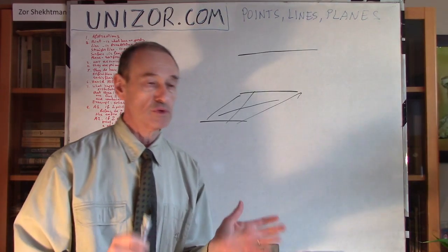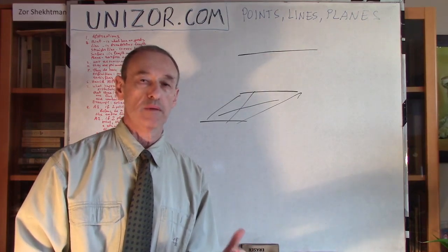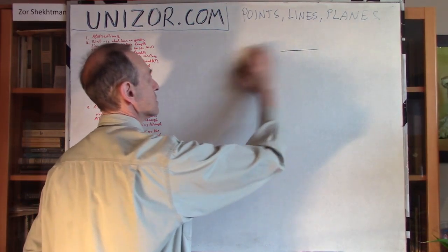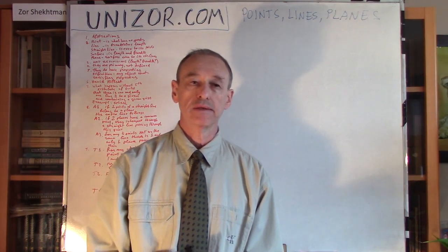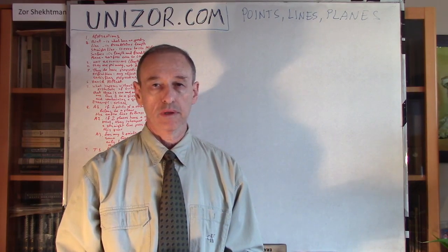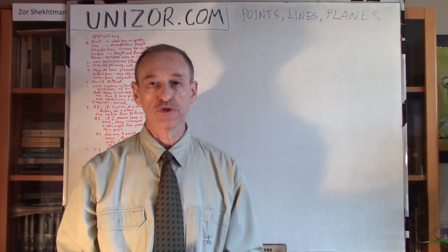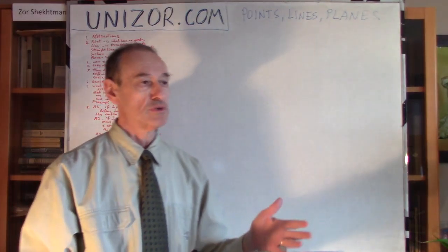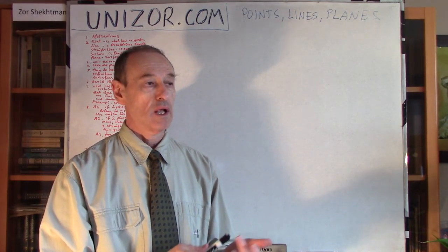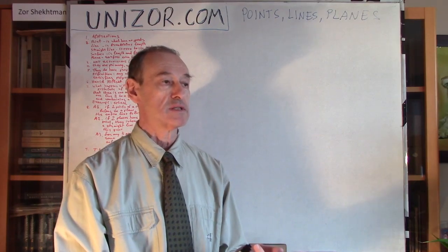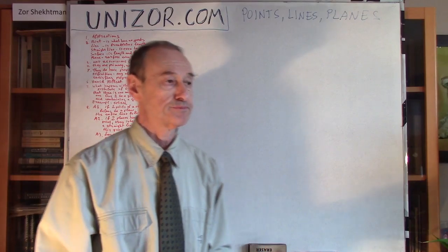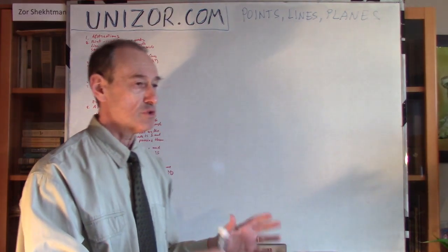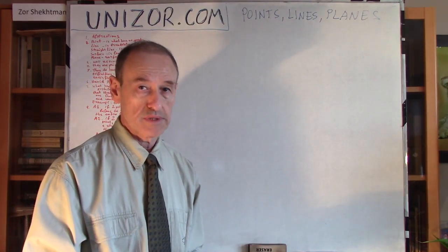So, these are Euclid's definitions, and as I was saying, you should not really consider them as definitions — it's just an explanation. What's interesting is that these concepts — a point, a line, a straight line, a plane — these are primary concepts, and the wise thing to do is just not define them at all. Because to define them, you have to use some other concepts. Like, for instance, Euclid was using the concepts of length, breadth, and parts. But what are length, breadth, and parts? Obviously, they're not defined either. So, the best thing to do is not define the primary concepts in geometry.